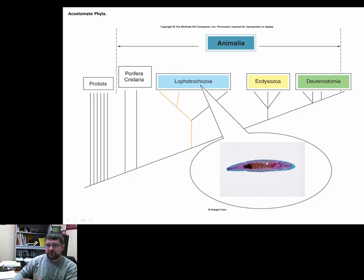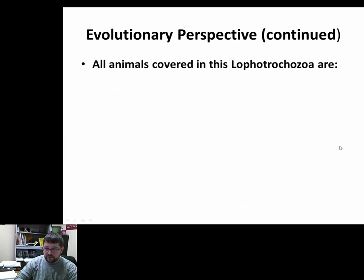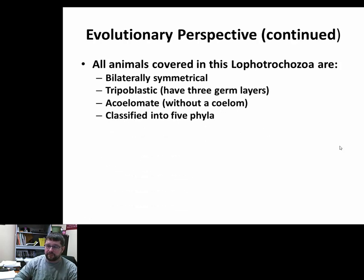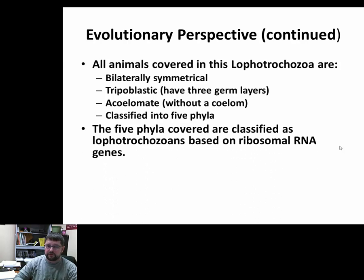All animals under Lophotrochozoa are bilaterally symmetric, triploblastic—so they have an ectoderm, endoderm, and mesoderm in between—and acoelomates, so they do not have a coelom. They're classified into five phyla. The five phyla are all based mainly on ribosomal RNA and a little bit of morphology, these features like bilateral symmetry, triploblastic, acoelomates.